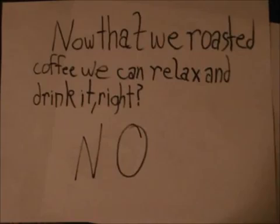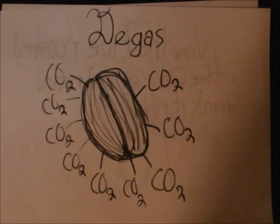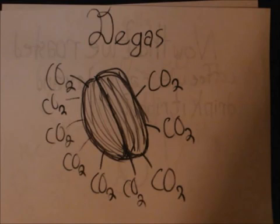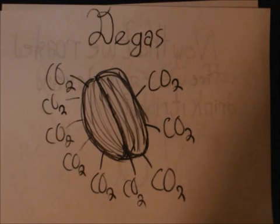So now that we're done with all of this roasting, we can drink it, right? Well, not exactly. Coffee, right after being roasted, releases carbon dioxide gas. When you make coffee right after it's been roasted, the carbon dioxide gas will form with water and make carbonic acid. Carbonic acid has a formula of H2CO3, which fits perfectly with CO2 and H2O. So you have to wait a bit.